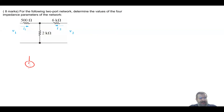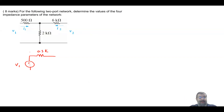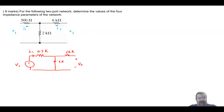I will apply a voltage v1 here. I'll express everything in kilohms to avoid unit confusion. This is i1; we have the 0.5 kΩ resistor, then the 2 kΩ resistor, then the 6 kΩ resistor. This is your v2, and i2 = 0 because the right port is an open circuit.